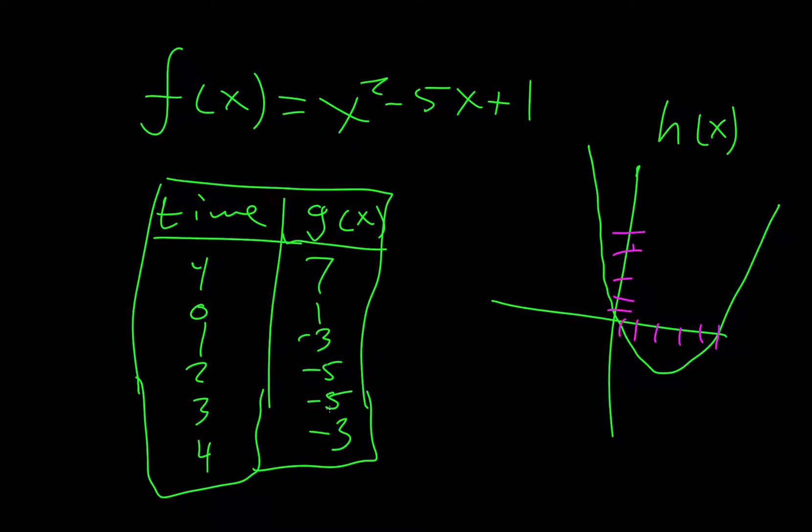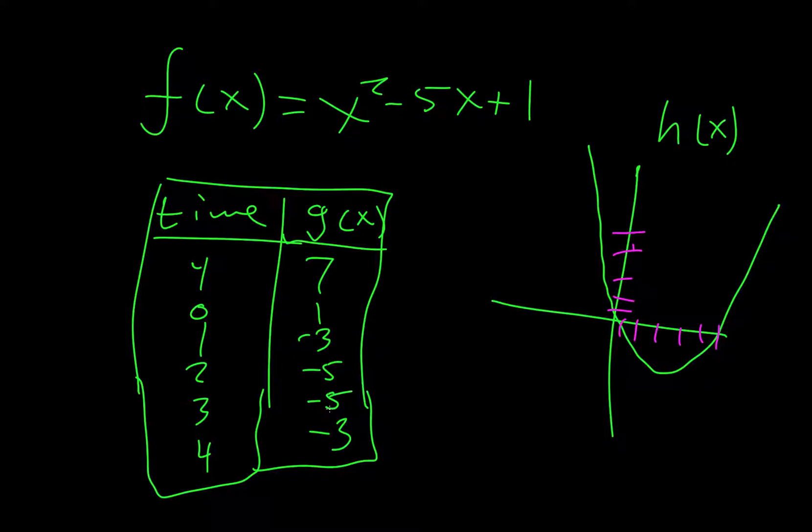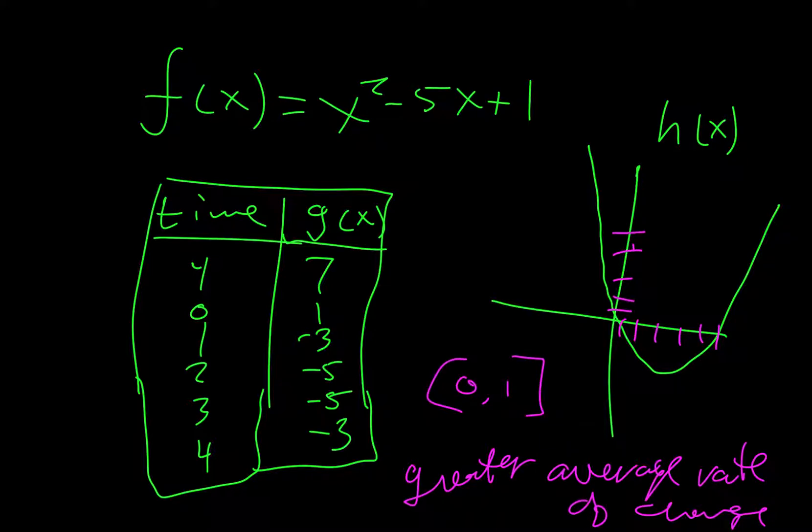And we want to know which one has a greater average rate of change over the interval. So, greater average rate of change on the interval from 0 to 1. In the different notations, we're going to do it differently.